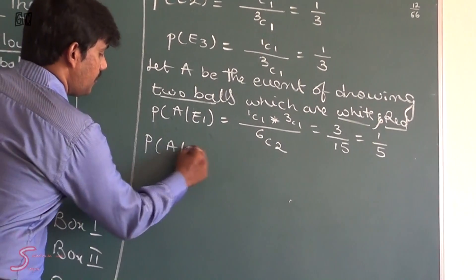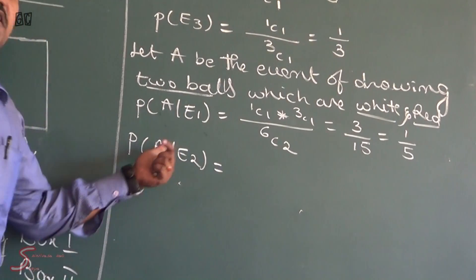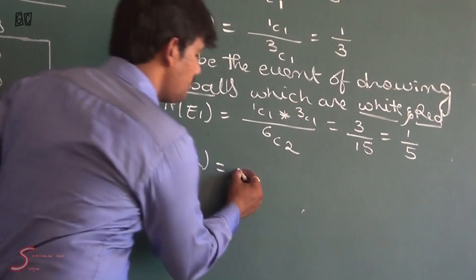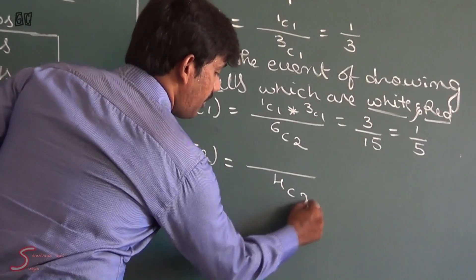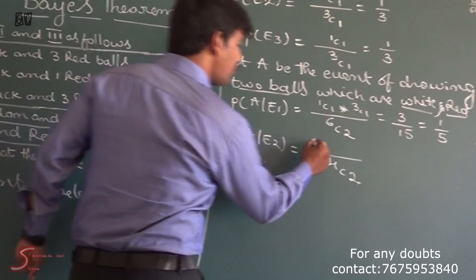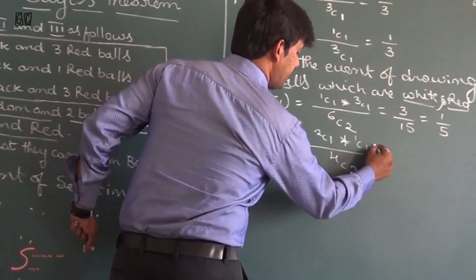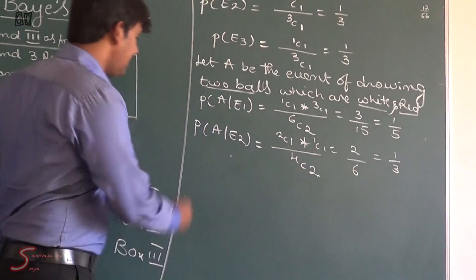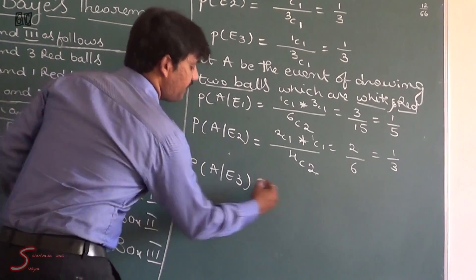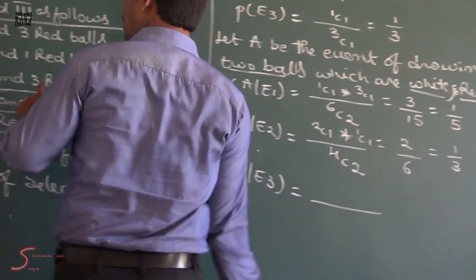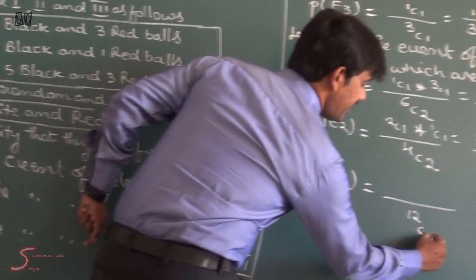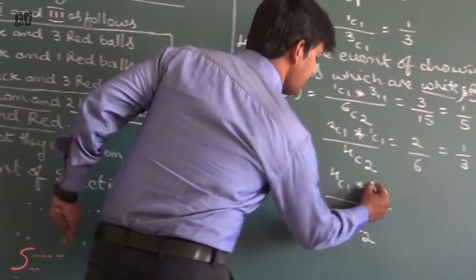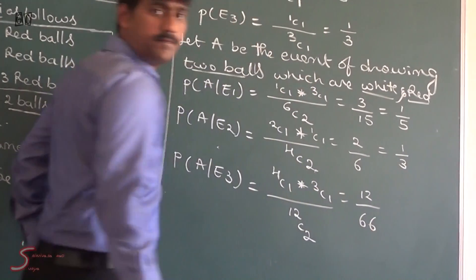Now P(A|E2): probability of drawing two balls which are white and red from already selected box 2. In box 2 the total number of balls is 2 + 1 + 1 = 4. Out of 4 we select 2 balls — white and red: 2C1 into 1C1, divided by 4C2, giving 2 by 6, which equals 1 by 3. Finally, P(A|E3): in box 3 total balls = 4 + 5 + 3 = 12. Out of 4 white select 1 and out of 3 red select 1: 4C1 into 3C1 divided by 12C2, giving 12 by 66.